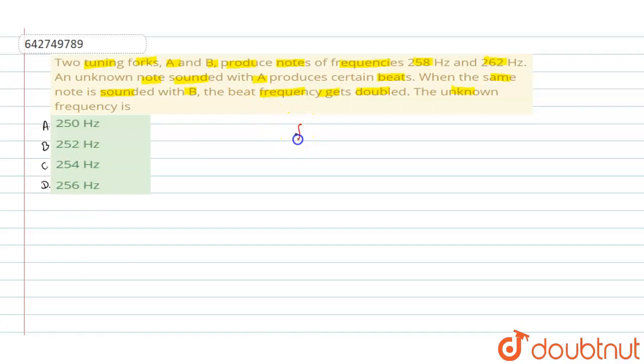Now we can start from the given. In the question we have given frequency of A is equal to 258 hertz and frequency of B we have given 262 hertz.